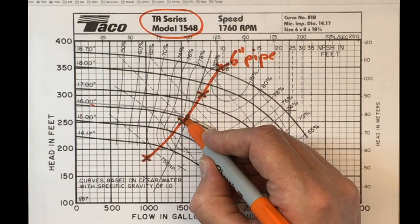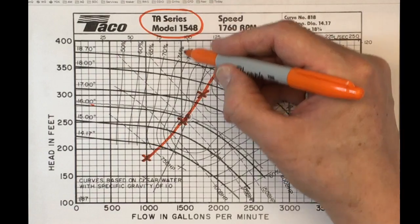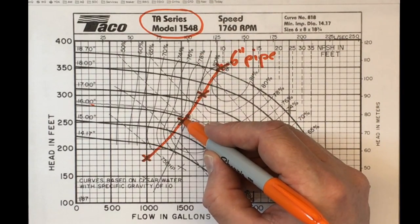We could maybe pick the 16-inch impeller, an off-the-shelf part. We'd get a little bit lower than our design flow rate, but that might work out okay.